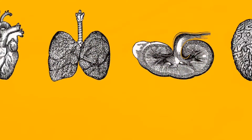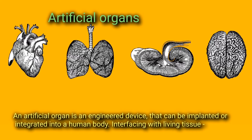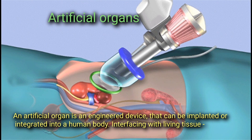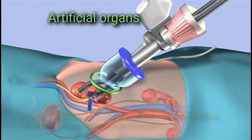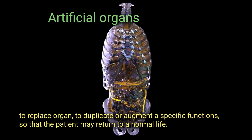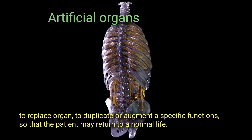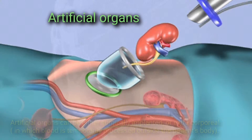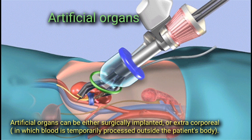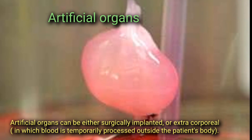An artificial organ is an engineered device that can be implanted or integrated into the human body, interfacing with living tissue to replace an organ or duplicate a specific function so that the patient may return to a normal life. Artificial organs can be either surgically implanted or extracorporeal, in which blood is temporarily processed outside the patient's body.